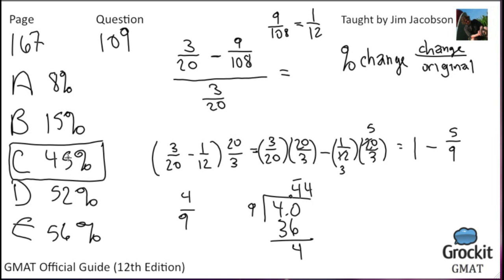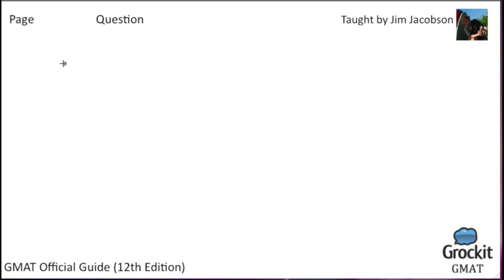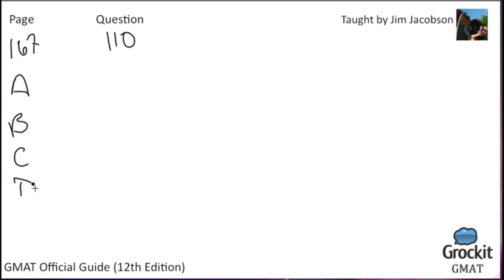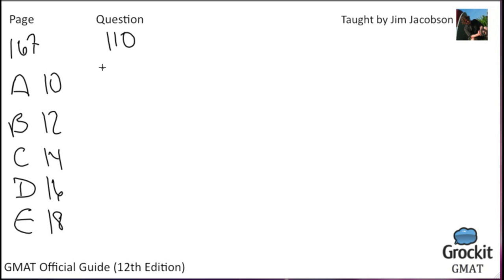On to question number 110. Answer choices are 10, 12, 14, 16, 18. If p is the product of the integers from 1 to 30 inclusive, what is the greatest integer k for which 3 to the k is a factor of p? This sounds frightening, but we don't need to multiply everything out.